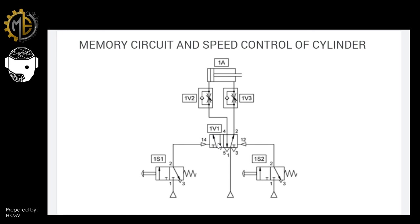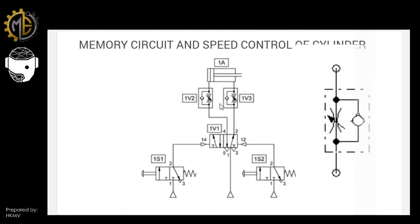For speed control, we use a one-way flow control valve as an auxiliary component, placed after the final control element. It controls the pressure going in and out of the double-acting cylinder. Placing it on the input side controls the incoming airflow; placing it on the output side controls the outgoing airflow. To control both extension and retraction speed of a cylinder, you need to place two one-way flow control valves.